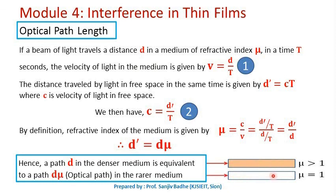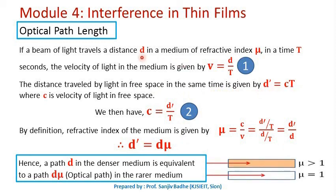Now let us consider the light ray traveling in air, that is free space. In the same time t, the light ray will travel a longer distance because the velocity of light in air is greater than the velocity of light in a denser medium. Let the distance traveled by the light in free space in the same time t be d dash, which is equal to c into t. Obviously, d dash will be greater than d. C is the velocity of light in free space, so we can write the velocity of light in free space as d dash upon t. Let us call this equation number 2.